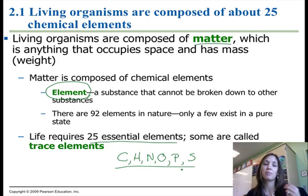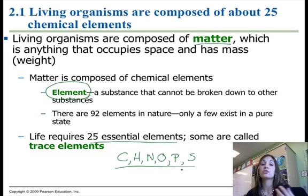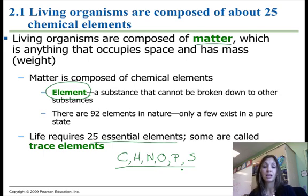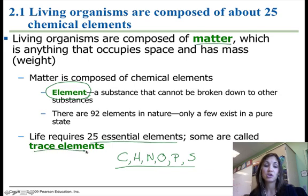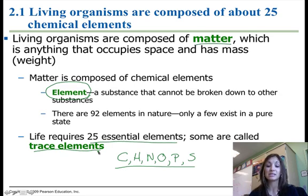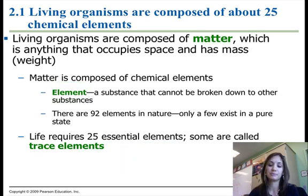It's these elements that make up our carbohydrates, our proteins, our lipids, and our nucleic acids. Others that we require in smaller amounts, like iron or iodine, are considered trace elements. Trace elements are important for metabolic function, but we don't need them in as high quantities as we need the others.